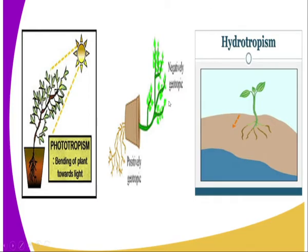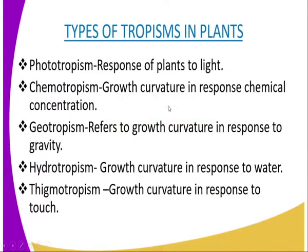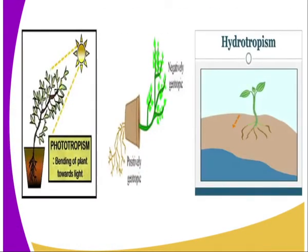When we come to our second diagram, we are going to look at geotropism, whereby geotropism refers to growth curvature in response to gravity. Looking at our second diagram, we see a plant whereby the roots are growing towards the soil. We say that the roots are positively geotropic, while the shoot has got negative geotropism, because the shoots are growing against gravity.